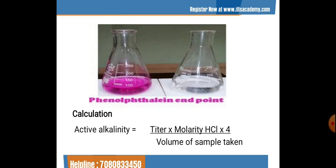The formula for calculating alkalinity is: titer volume × molarity of HCl × 4 / volume of sample taken. We put the quantity of HCl in ml used in this formula. The molarity of HCl standard solution is 0.1 molar — we put 0.1 here. The volume of sample taken for titration is, for example, 10 ml, so we put 10 ml in the denominator.